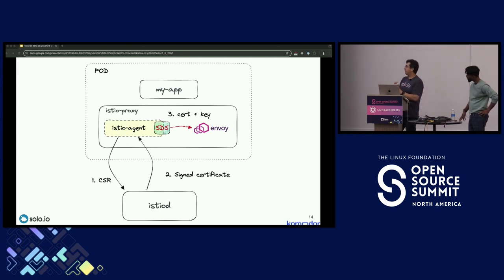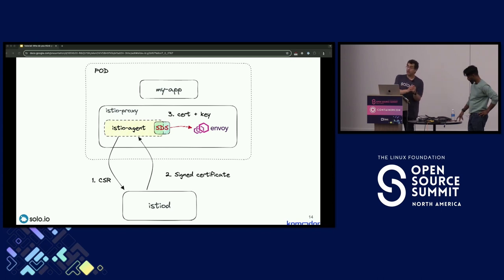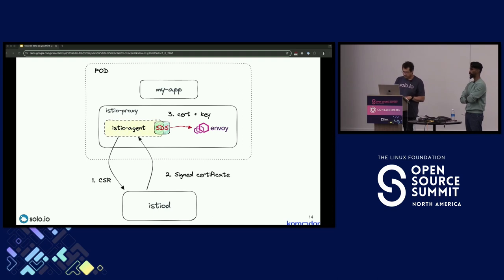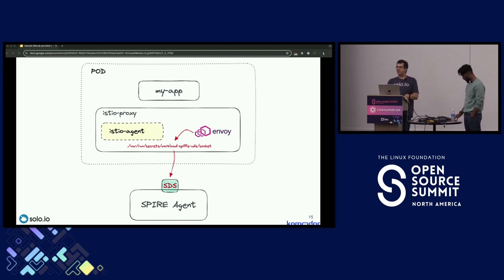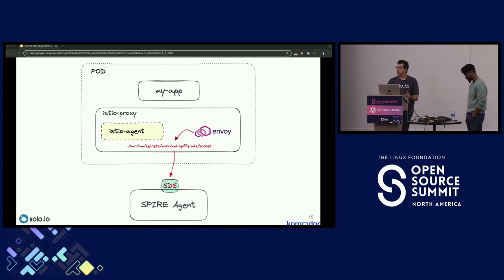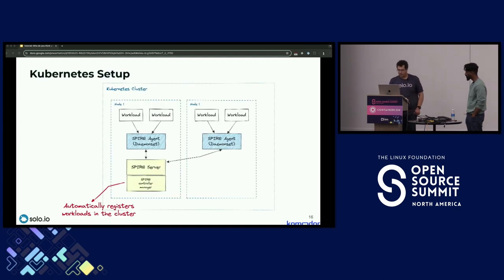There is logic in the Istio agent that checks for a specific socket path — if the socket doesn't exist, the SDS server starts. If it already exists, it uses what's there — that could be the SPIRE agent. When SPIRE is integrated, the SPIRE agent mounts its socket into the pod, and Envoy talks through that socket to the SPIRE agent whenever it needs certificates. The SPIRE agent streams certificates back to Envoy instead of Istiod handling it.